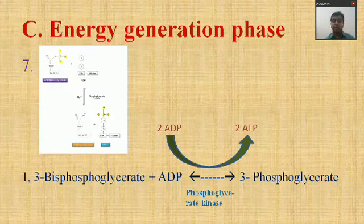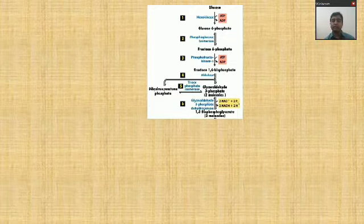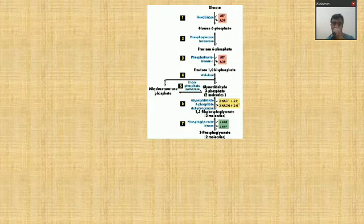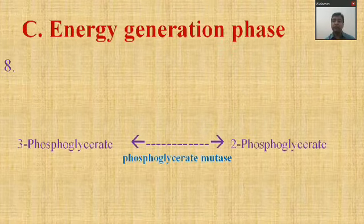The output of reaction seven is 3-phosphoglycerate and two ATP molecules. You can see in the diagram: at the end of reaction five, glyceraldehyde-3-phosphate is shown in brackets as two molecules; at the end of reaction six, 1,3-bisphosphoglycerate is shown in brackets as two molecules; and at the end of reaction seven, 3-phosphoglycerate again in brackets as two molecules. These reactions run simultaneously, and each compound is a three-carbon compound.